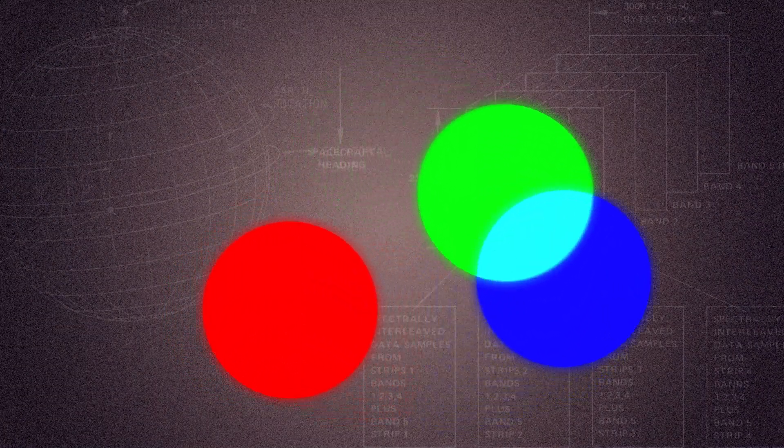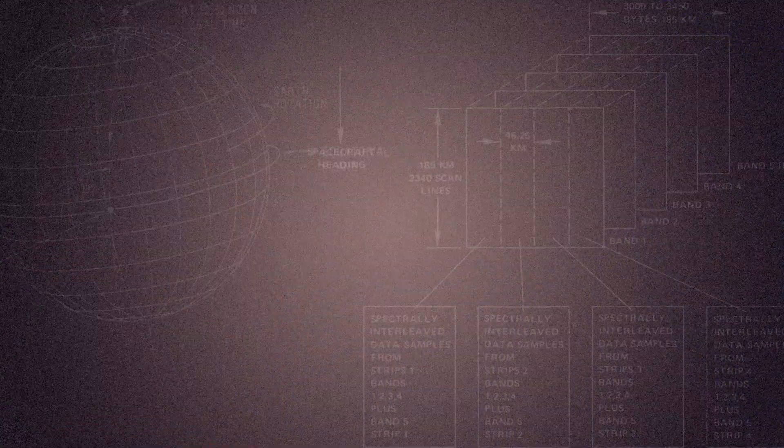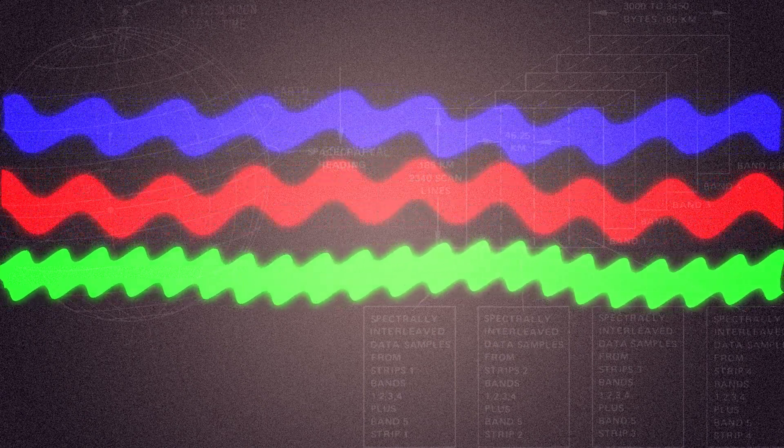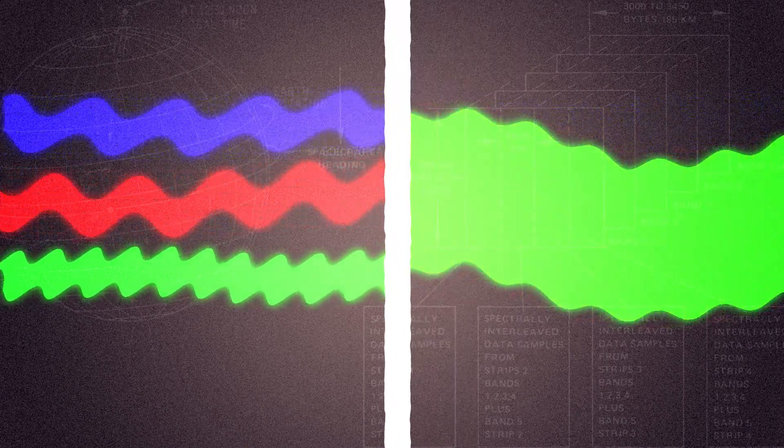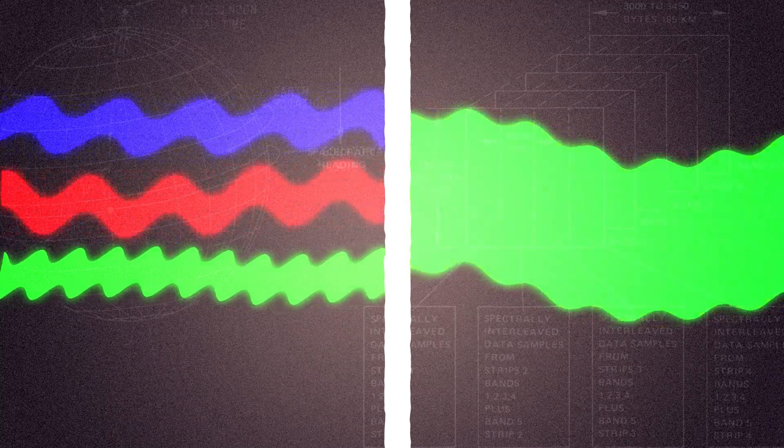True color images are made by combining red, blue, and green light. Combined together, these visible bands of light make up all the colors in the rainbow and all of Landsat's true color images.